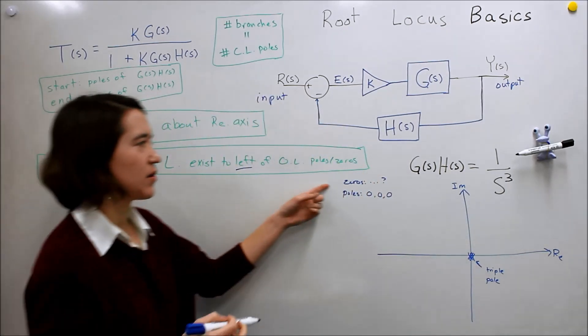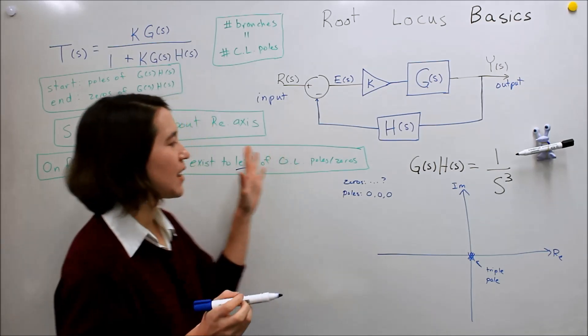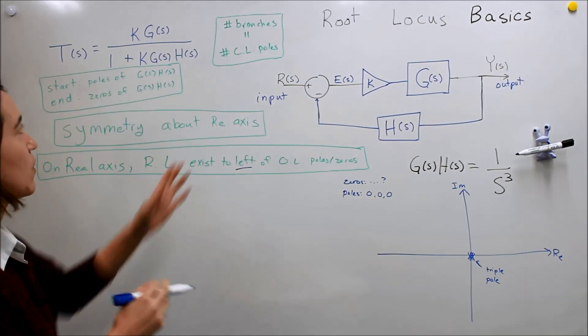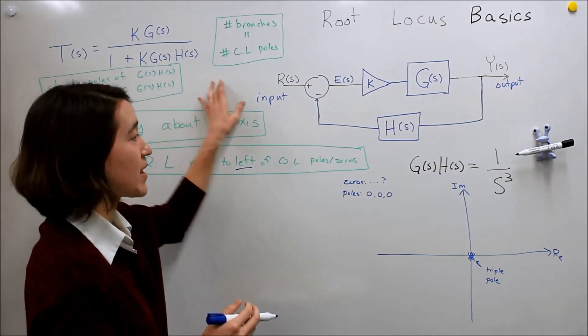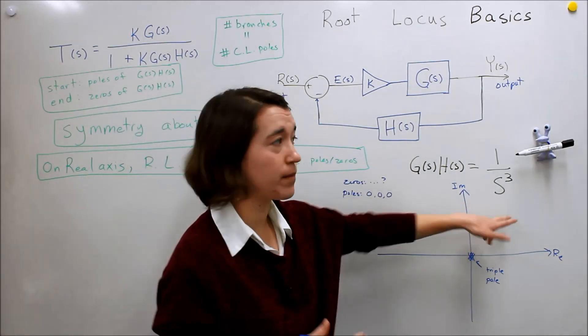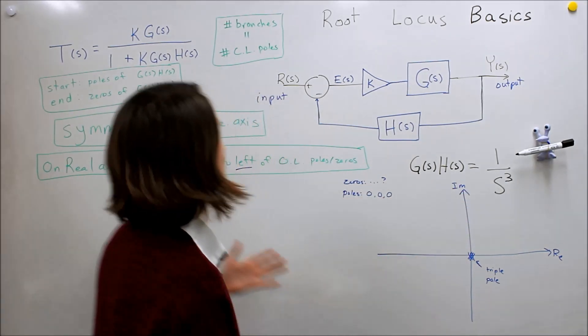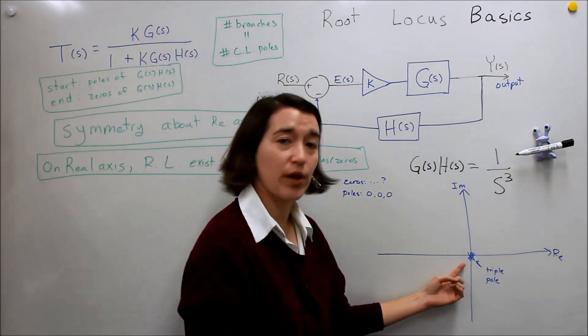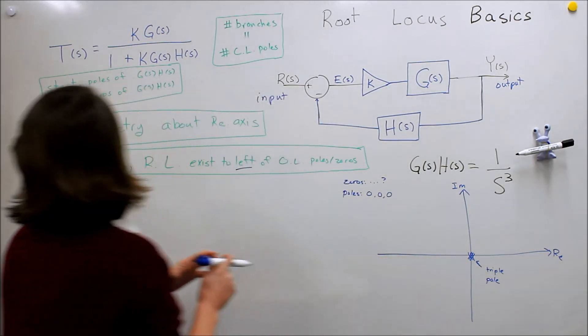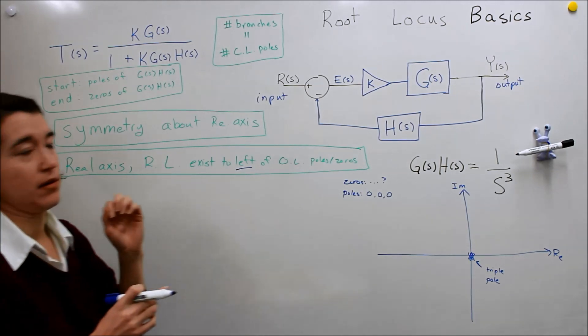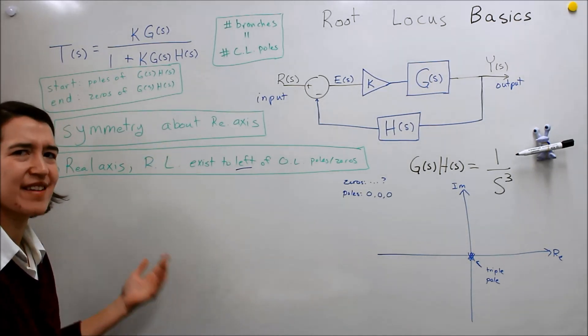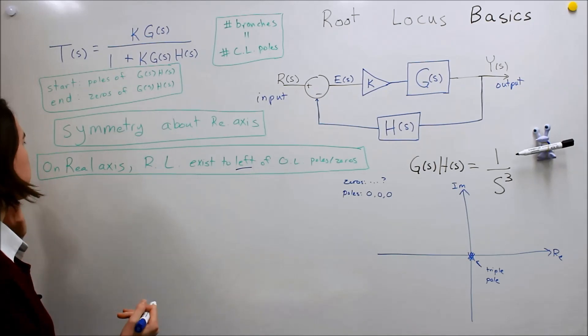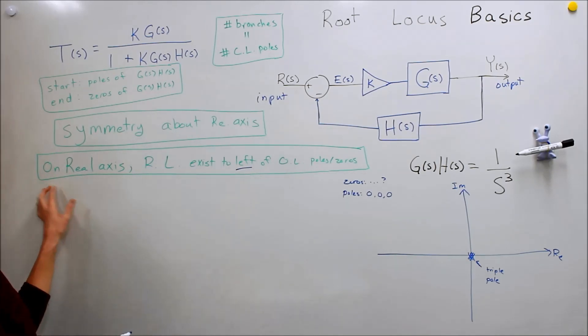Well, we're not quite sure what to do with this because there's no zeros, but let's see how we can apply the rest. We're going to have three branches, so we have three poles here. We should have three branches. We know they're going to start at the pole, so all three will start at this pole at zero. And it has to be symmetric about the axis. So whatever path it takes, it has to be symmetric.